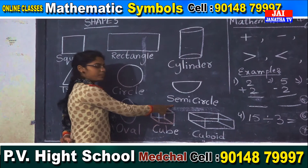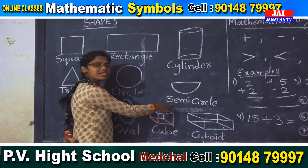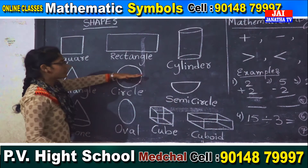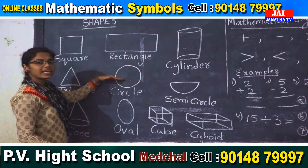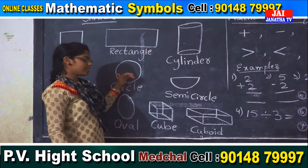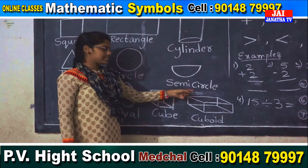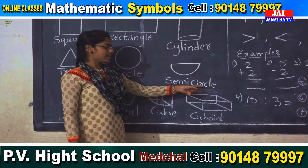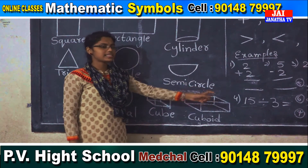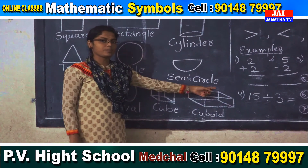And see here, what is this shape? This is a semicircle — means half of the circle, half part of the circle. S-E-M-I-C-I-R-C-L-E. Semicircle.